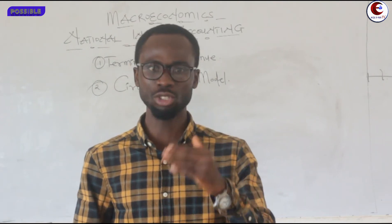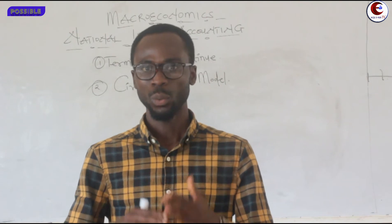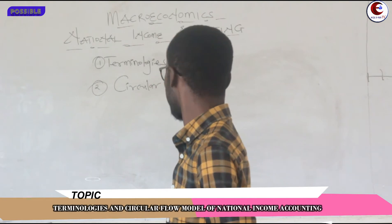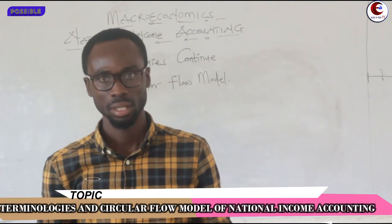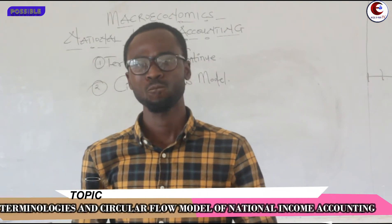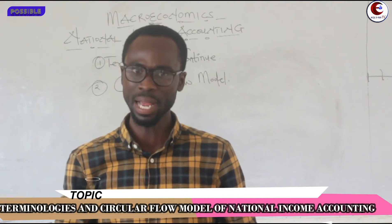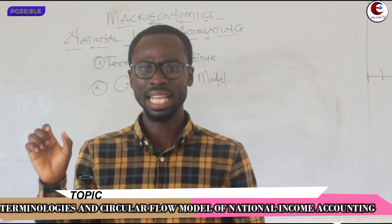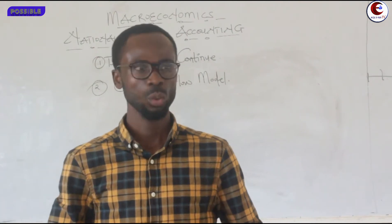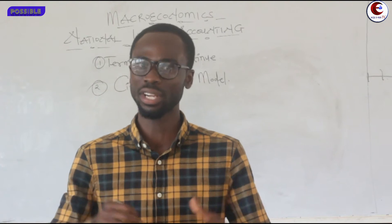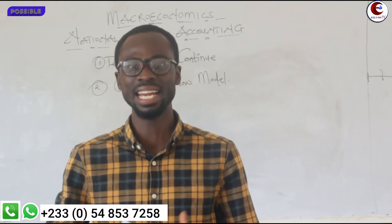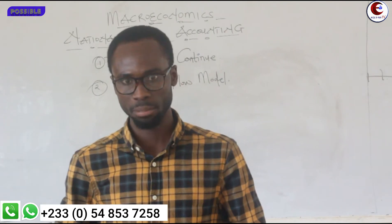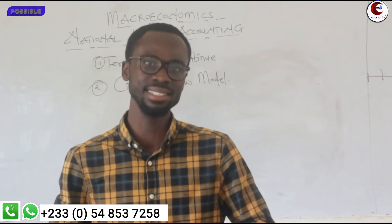Today is of no exception. We are going to continue with the topics, and then look at the circular flow model. Now, we have the household — we have explained it — but we say that they are the owners of the factors of production. When you talk about factors of production, what are we talking about? Factors of production are the resources that are employed by firms in order to produce goods and services.